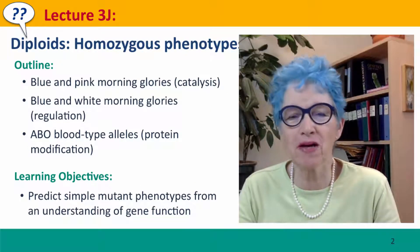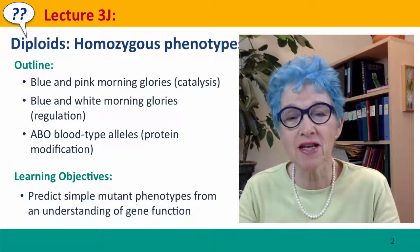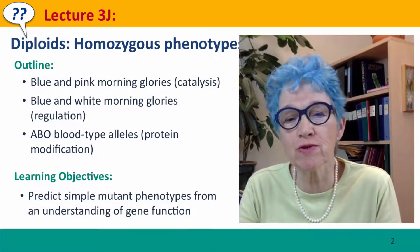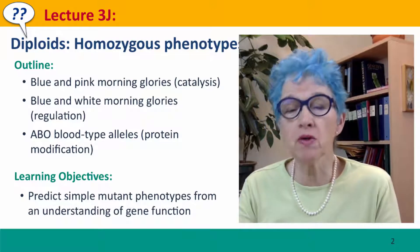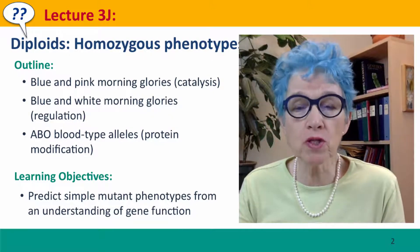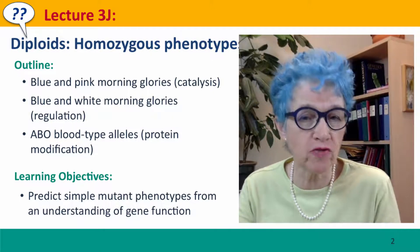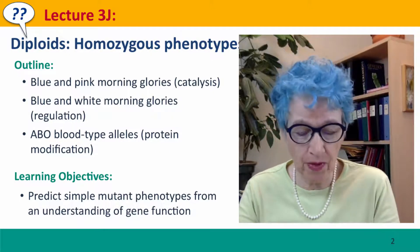Hi everyone. Welcome back to Useful Genetics. This is lecture 3j, where we're going to talk about diploids with homozygous phenotypes.